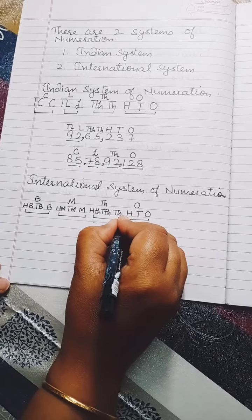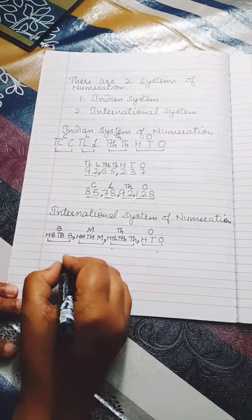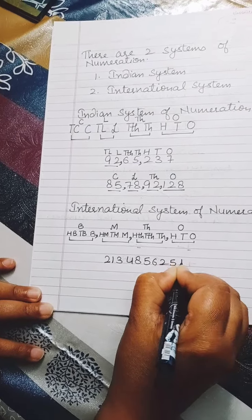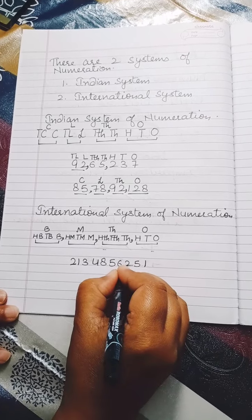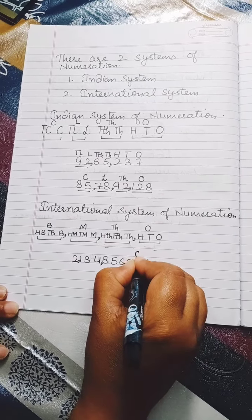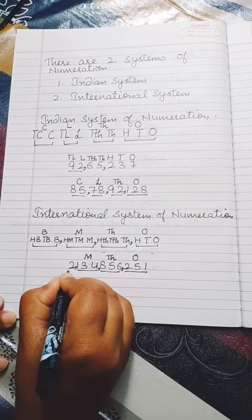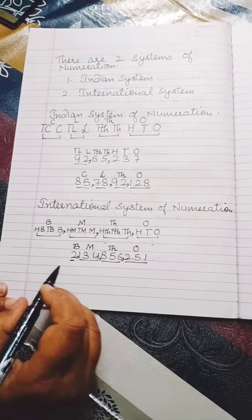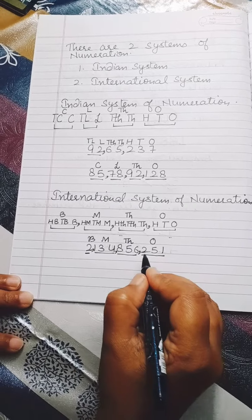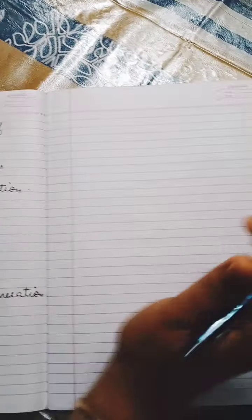In the International system, we put a comma before every three digits from the right. Let's read the number 2,134,856,251. We place commas before three digits, then three more, then three more. This gives us: ones period, thousands period, millions period, and billions period. The number reads: two billion, one hundred thirty-four million, eight hundred fifty-six thousand, two hundred fifty-one.